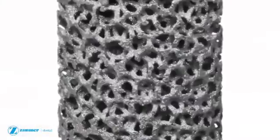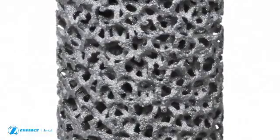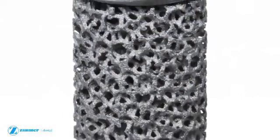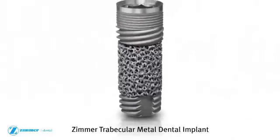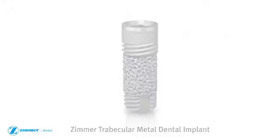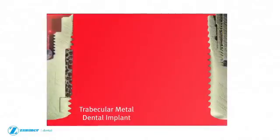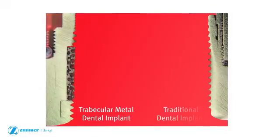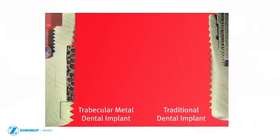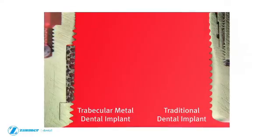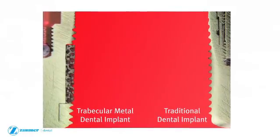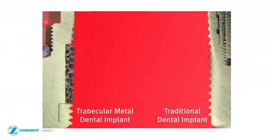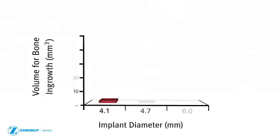By incorporating a porous three-dimensional material into a traditional root form implant, Zimmer has moved beyond bone on-growth. Due to the high porosity of trabecular metal material, the trabecular metal dental implant provides volume for bone in-growth and more surface area for bone on-growth than conventionally textured titanium dental implants.